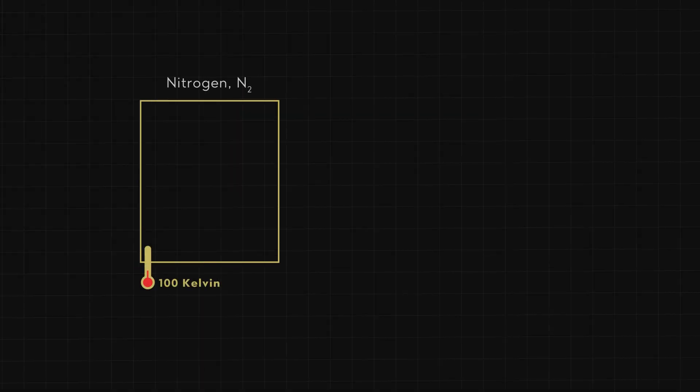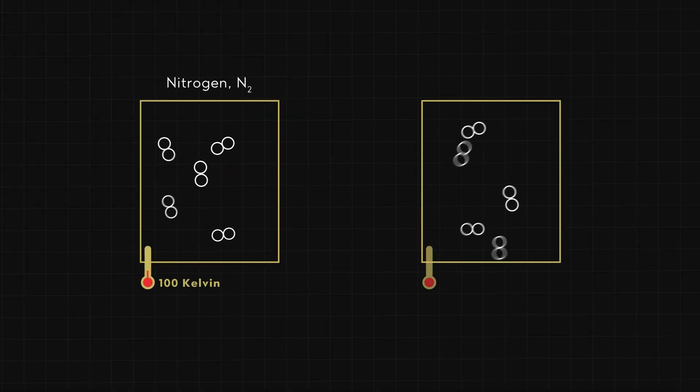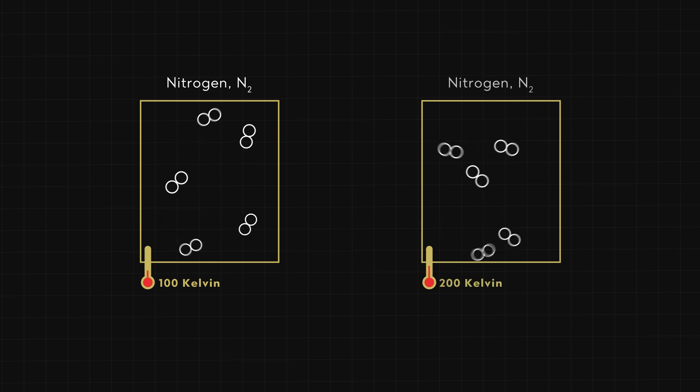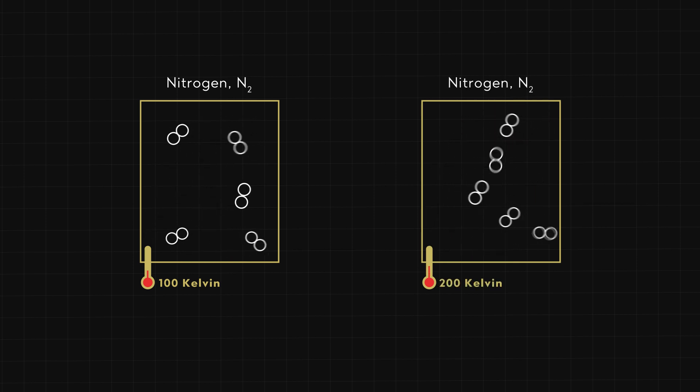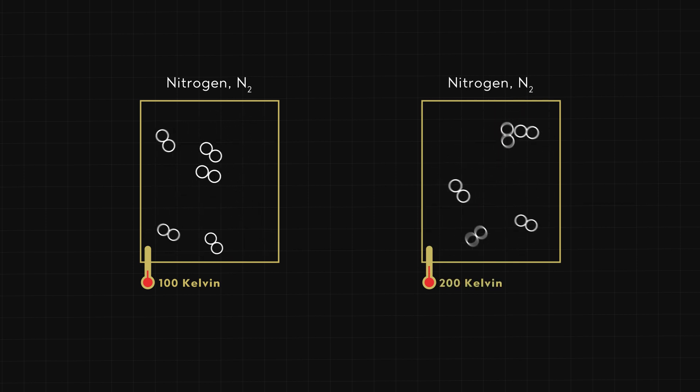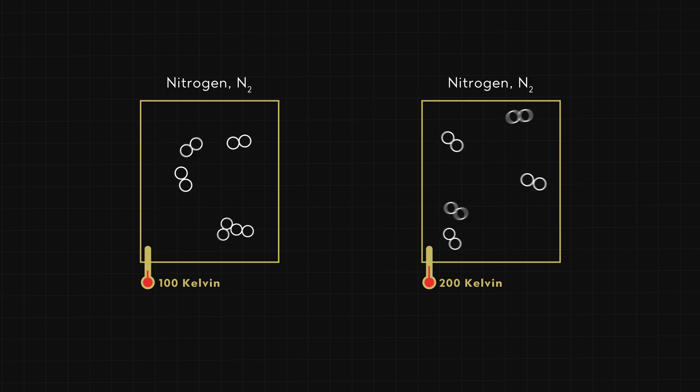Double the temperature of your stovetop, and the average kinetic energy of the atoms in your stovetop doubles. It's easier to visualize motion for gases, so let's switch to two samples of nitrogen gas — one at 100 Kelvin, the other at 200 Kelvin. The molecules in the hotter sample are clearly moving faster, but it's hard to see what is going on because there are a lot of particles and they're all moving at different speeds.